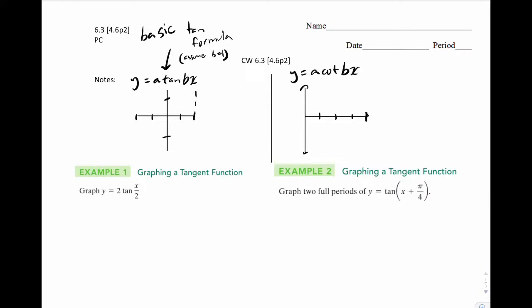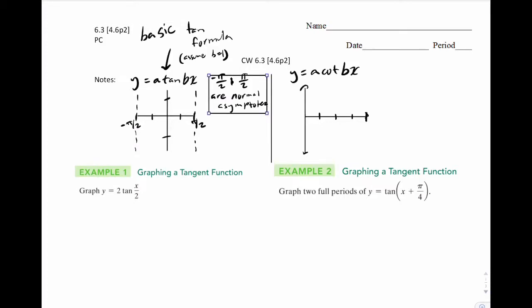Immediately I'm going to draw an asymptote here and here. Underneath that let's write pi over 2 and negative pi over 2. It's essential to understand first that negative pi over 2 and pi over 2 are your normal asymptotes. That is really important, so make sure you highlight that in your notes and put a box right there.